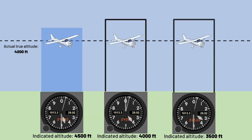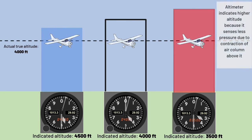On warm days, the column of air measured by the altimeter is expanded. This results in the altimeter measuring more pressure above it — more column above the aircraft equals more pressure. The altimeter sensing more pressure means the indicated altitude will be lower than it should be. This is where the mnemonic 'from low to high, clear the sky' comes from — when you fly from a low temperature area to a high temperature area, the altimeter will read higher pressure and thus a lower altitude, and you will be flying higher than you think you are.